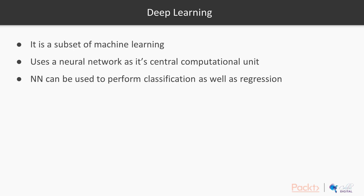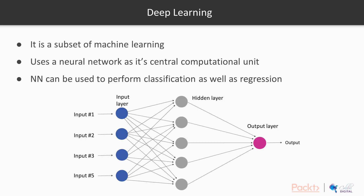Before we talk about CNNs, we first need to take a look at deep learning. Deep learning is a subset of machine learning which uses a neural network as its core computational unit. A neural network can be used to perform classification as well as regression. You can think of it as a black box which takes in a bunch of inputs in its input layer, processes them internally in its hidden layer, and then returns one or more outputs in its output layer.